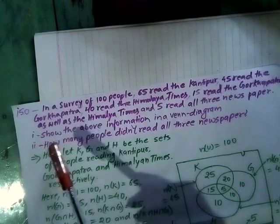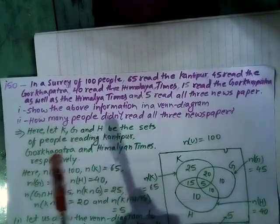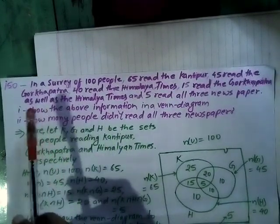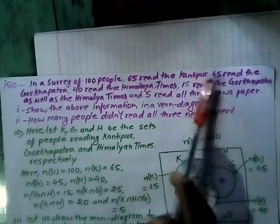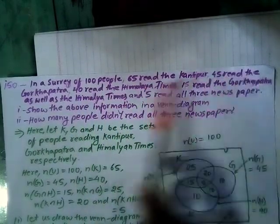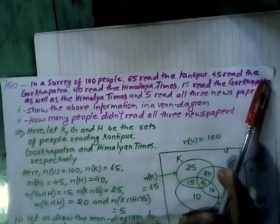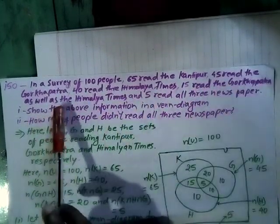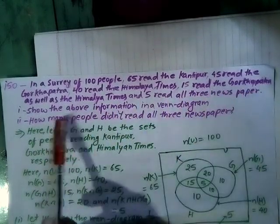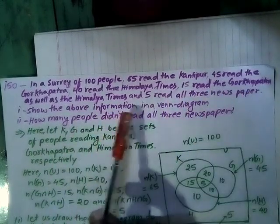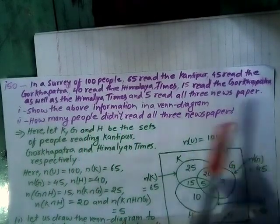Here, question number 150. In a survey of 100 people, 65 read Kantipur, 45 read Gorkha Patra, 40 read Himalaya Times, and 15 read Gorkha Patra as well as Himalaya Times. 5 read all 3 newspapers. Show the above information in a Venn diagram and find how many people do not read all 3 newspapers.